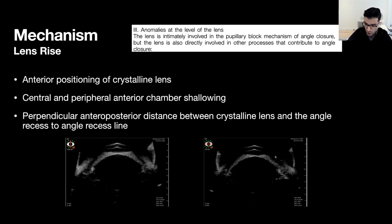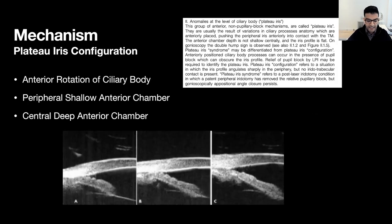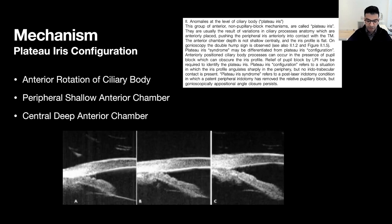In lens rise patients, look for an iris contour that follows the contour of the anterior lens capsule. Finally, mechanism three is plateau iris. In these patients, the ciliary body behind the iris is anteriorly rotated, causing the peripheral anterior chamber to shallow and, as a secondary result, causing the angles to close.